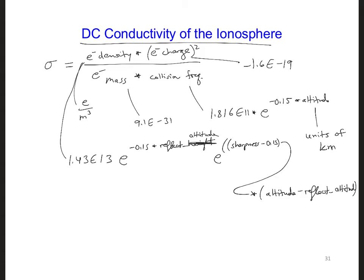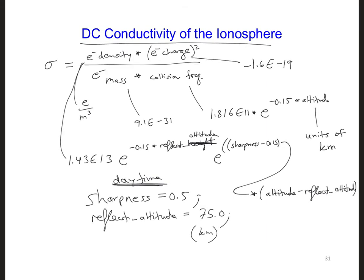Sharpness is 0.5. We're going to assume daytime conditions, so sharpness will be 0.5. And the reflection height, or altitude, will be 75. So the reflection altitude is the altitude at which we can expect VLF waves to fully reflect on the ionosphere. It's in units of kilometers. And sharpness describes how sharply the profile increases.